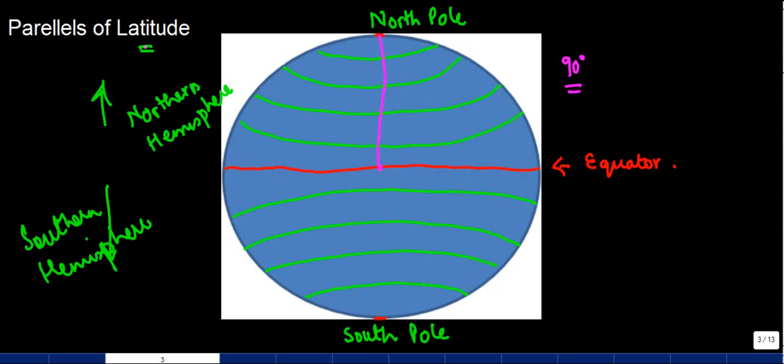So we refer to these parallels of latitude in terms of degrees. The ones in the Northern Hemisphere are referred to as, for example, if this is 20 degrees North, we write it as 20 degree North latitude. Similarly, this is known as 40 degree North latitude. The equator is basically 0 degrees.